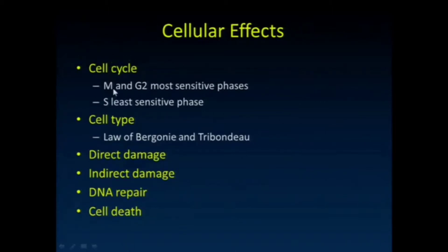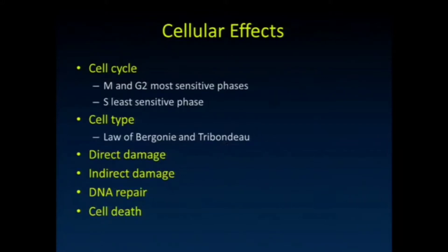If you look at the parts of the cell cycle where the cell is actively replicating DNA and getting ready to divide, that's when the cell is most sensitive. The S phase is the least sensitive phase. Cells that spend more of their time replicating are more likely to have some proportion in one of those sensitive phases. So in general, although not always true, cells that are more highly metabolically active and replicating more frequently are more sensitive to radiation damage.